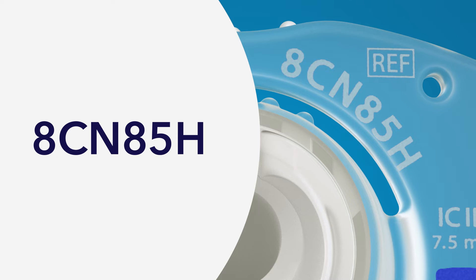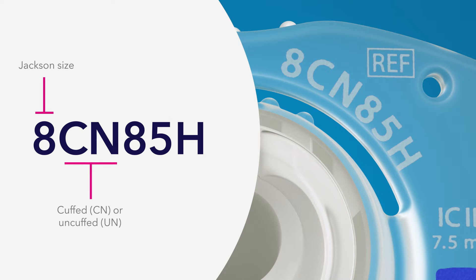The first number is the Jackson size. The first letters indicate a cuffed (CN) or uncuffed (UN) tube. The second numbers indicate the ISO size, or the inner diameter of the outer cannula.